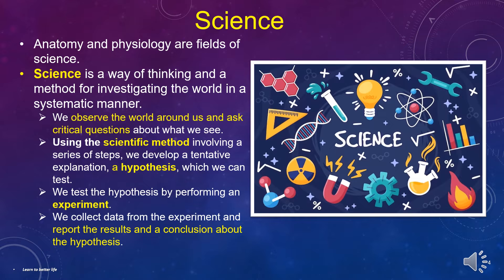Anatomy and physiology are fields of science. Science is a way of thinking and a method for investigating the world in a systematic manner. We observe the world around us and ask critical questions about what we see. Using the scientific method involving a series of steps, we develop a tentative explanation and a hypothesis, which we can test. We test the hypothesis by performing an experiment, collect data, and report the results and a conclusion about the hypothesis.